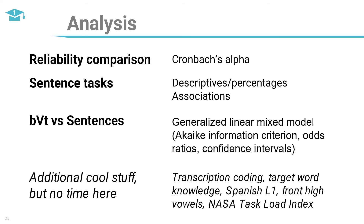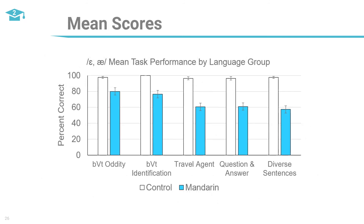Several analyses were done for this experiment, but in the interest of time only a selection will be covered — specifically the front mid-low vowel pairs, though results were mirrored in the high vowel pair. If you're interested in additional measures and results, please feel free to contact me. Looking at the mean scores for each prompt type, we can see a clear drop-off in connected speech tasks, far more so than in Experiment 1, which used closed-ended prompts.